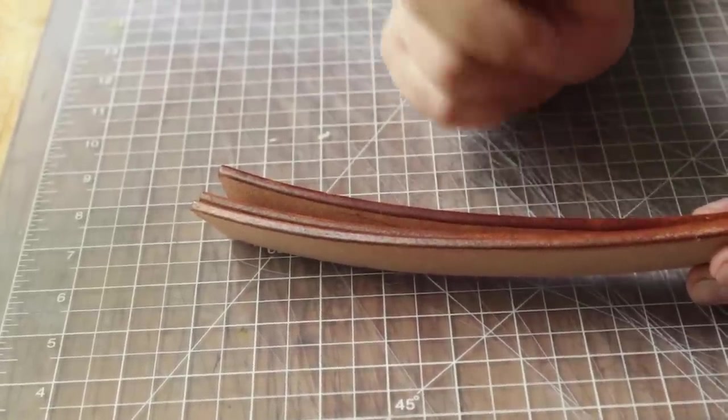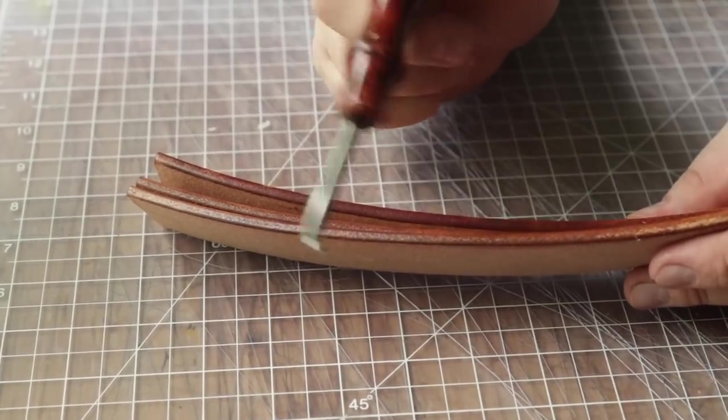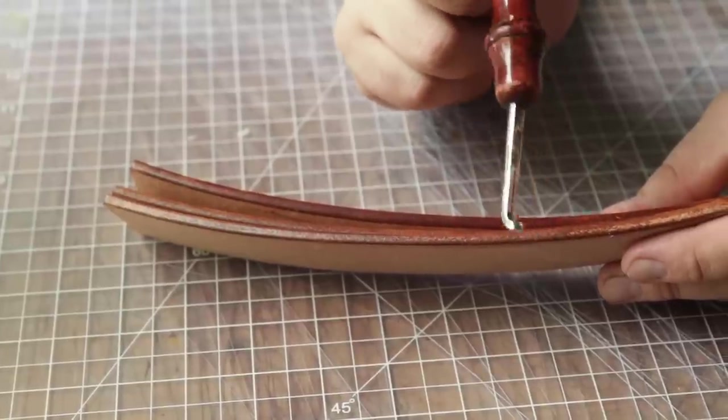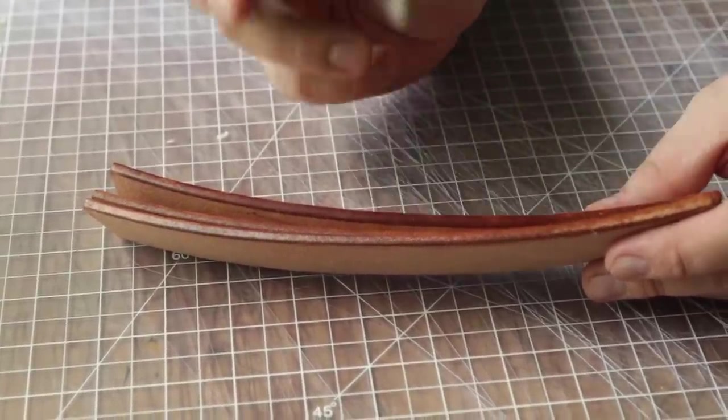But I do love the tokonole as well. Just remember, if you're going to do the mirror edge thing, if you do a layer of tokonole, then sand with 400, then a layer of tokonole, then sand with 800, up and up and up, you're not really polishing the leather as much as you are just creating a polished layer of tokonole because it has glue in it, it has wax in it, etc.